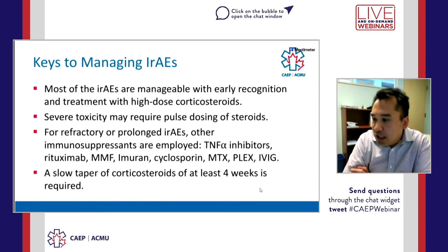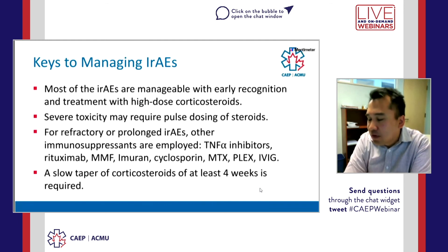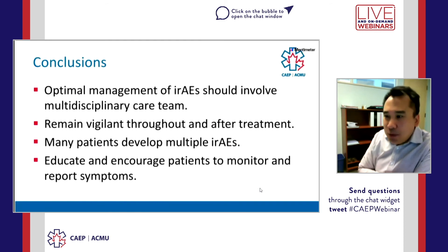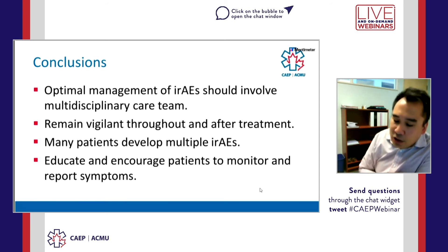Neurological toxicities are less than 5%, but 50% of patients can present with concomitant immune-related adverse events affecting other organs. Whenever I see myositis or a neurological complication from immune checkpoint inhibitors, I always draw a troponin even in the absence of cardiac symptoms. Any component of the nervous system can be affected — from muscles to the neuromuscular junction. I've seen myeloradiculopathy, myasthenia gravis, and Guillain-Barré. Keys to managing immune-related adverse events: most are manageable with early recognition and high-dose corticosteroids. Severe toxicities may require pulse dosing of steroids at 1g corticosteroids. For refractory or prolonged irAEs, corticosteroid-sparing agents are used including TNF-alpha inhibitors, rituximab, MMF, imuran, cyclosporine, methotrexate, PLEX, and IVIG. A slow taper of at least four weeks is required.